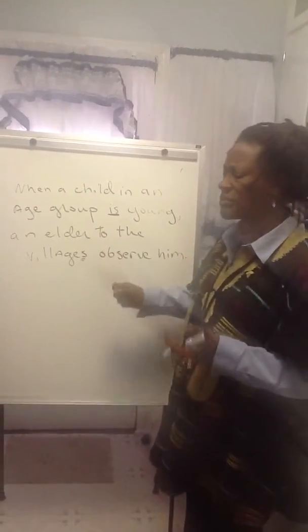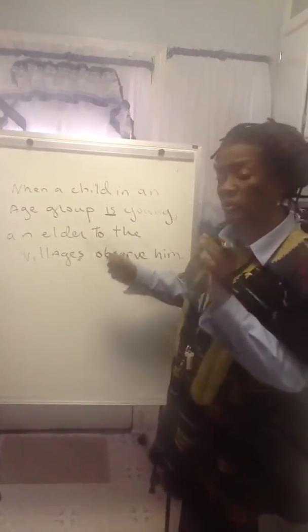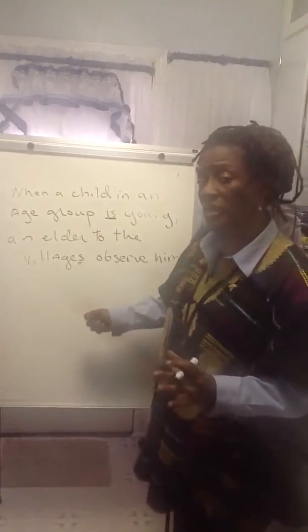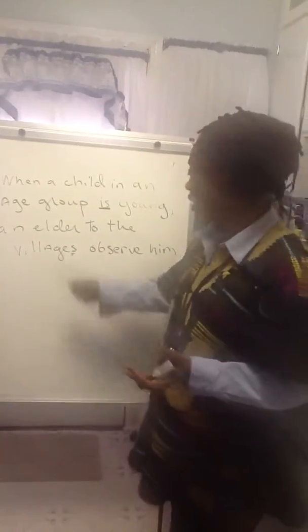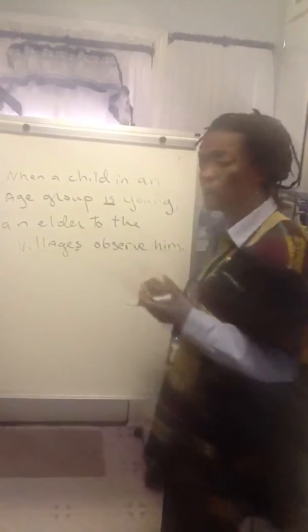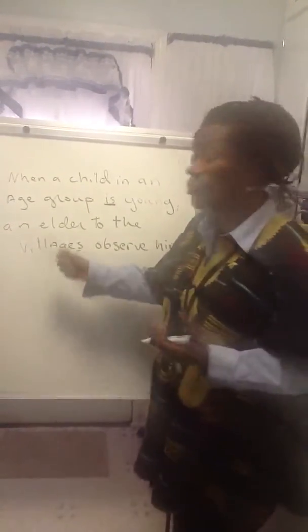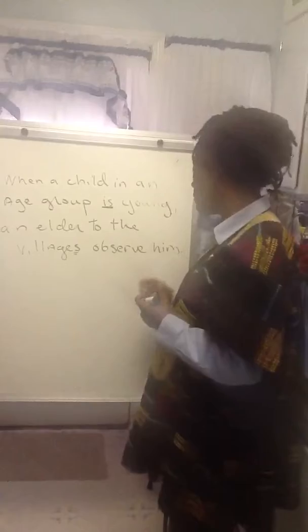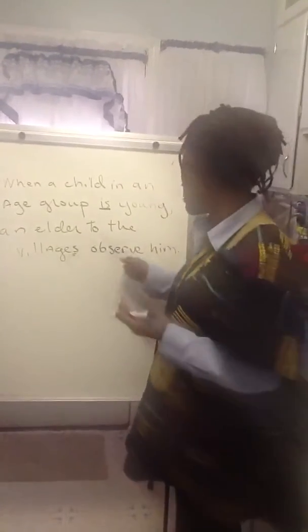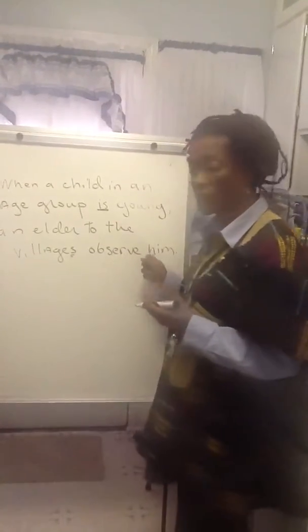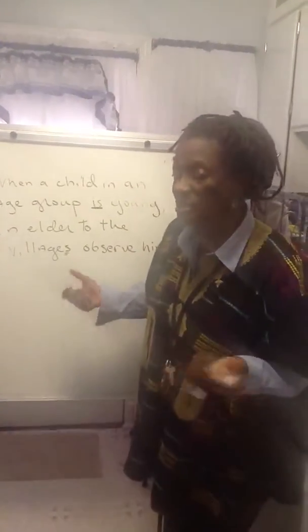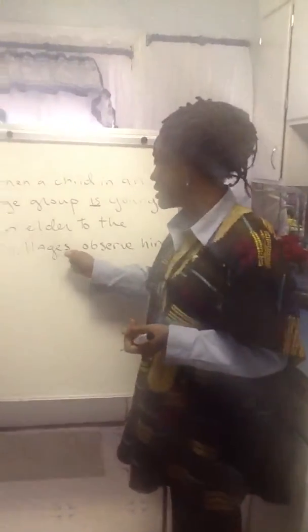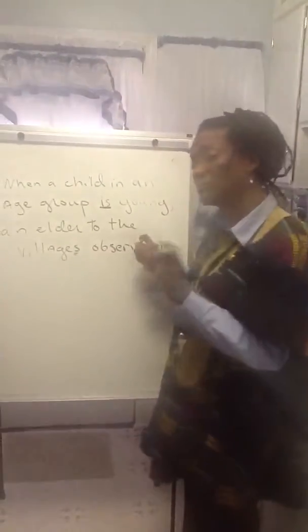Do you think 'observe' is a verb? The way you test it, you say: can I say 'I observe'? Or 'I observe him'? Or 'you observe him'? Or 'she observe him'? You can't say 'she observe' — you would say 'she observes.' But you can say 'I observe him.' So you know this is a verb.